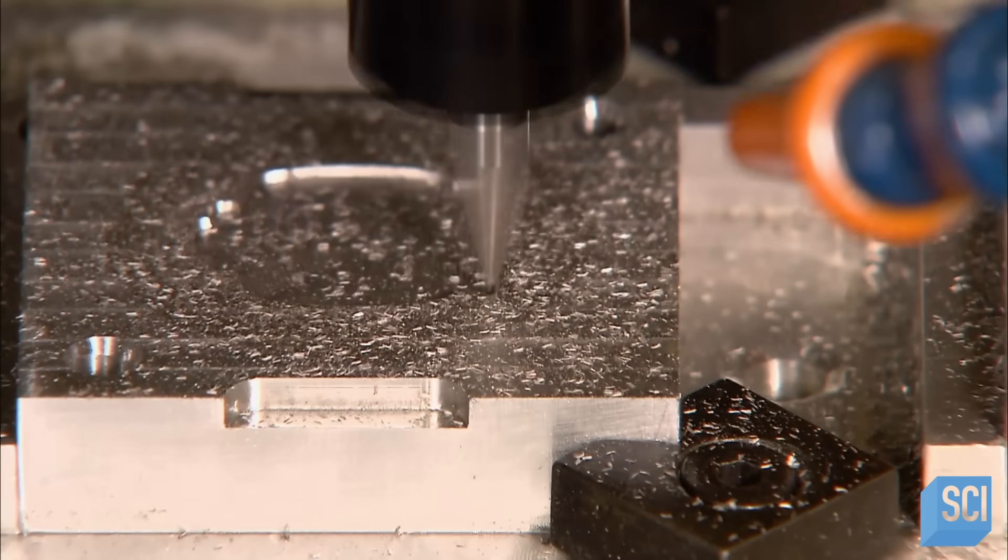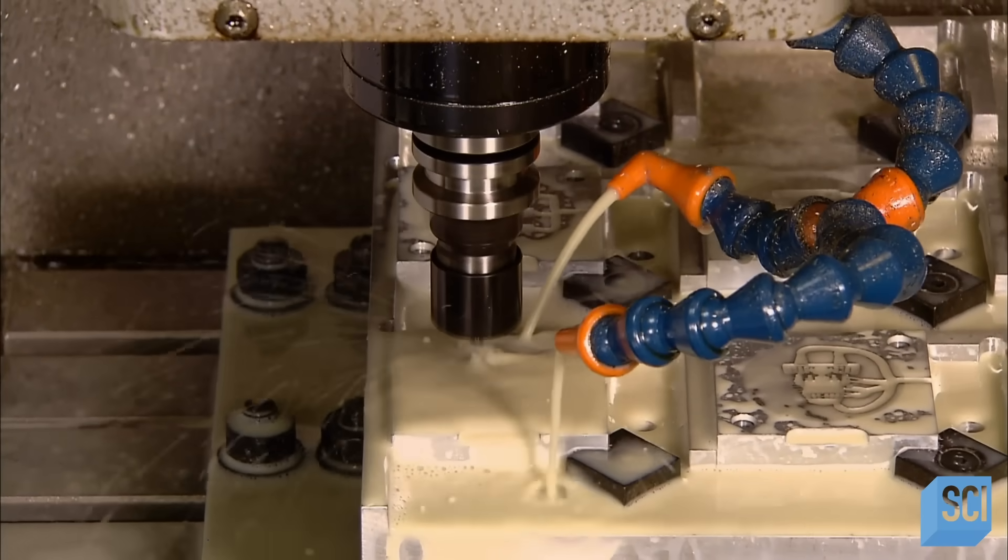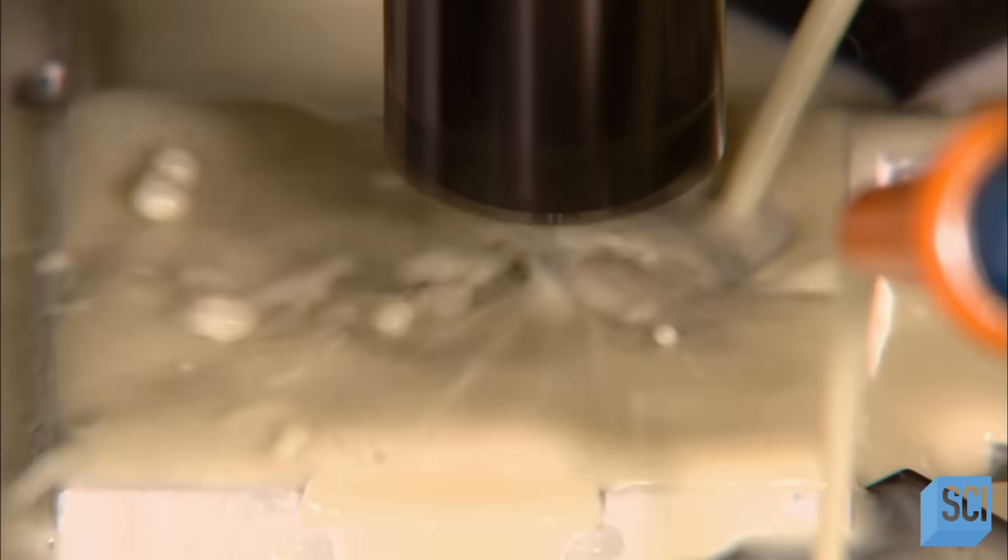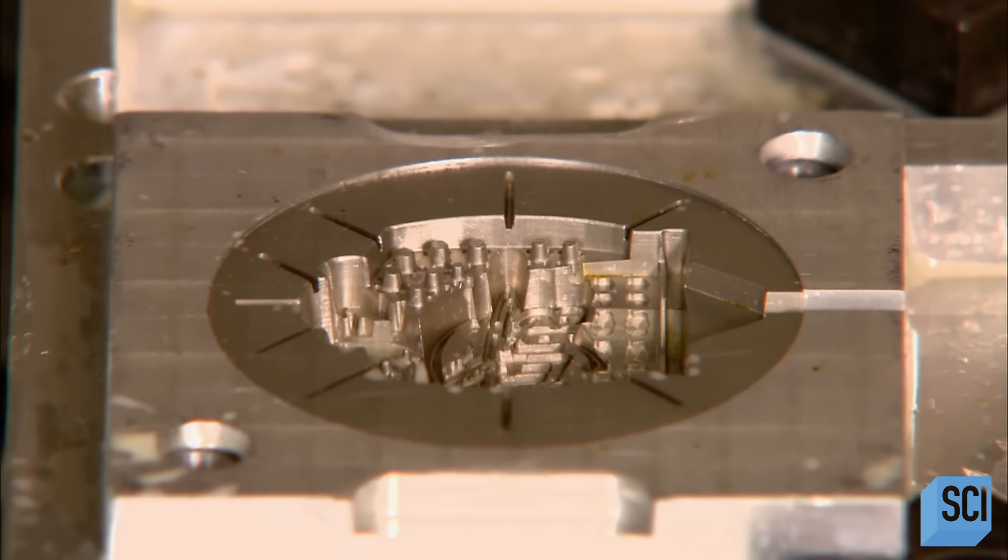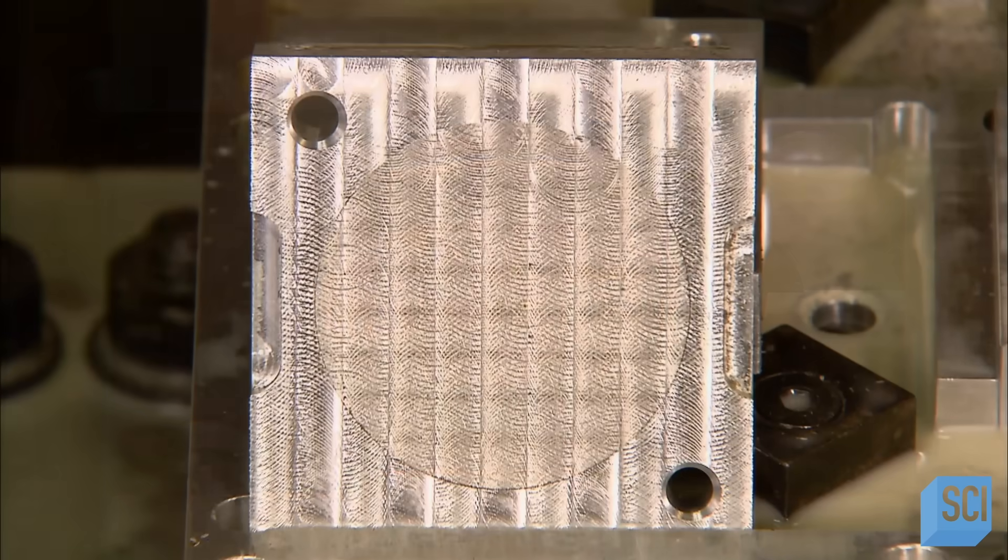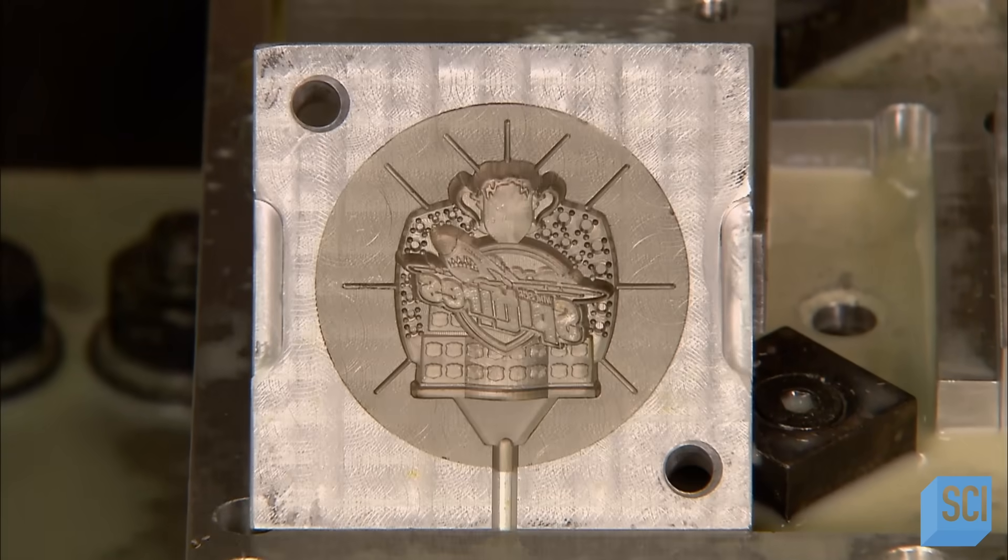The machine transforms two blocks of aluminum into a two-part mold for each of the flat, detailed components of the ring, meaning all the parts except for the base. A steady flow of lubricant washes away the shards of metal the machine cuts away. Bit by bit, the mold assumes very intricate detail of the ring design.